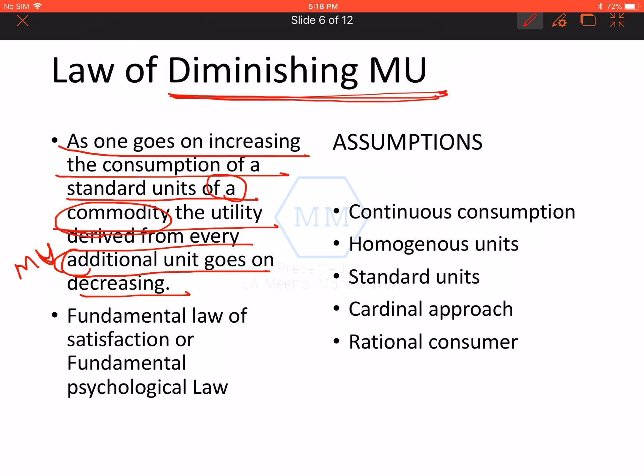Every additional unit — MU is what we are talking about. As we increase the consumption of a commodity, the amount of MU will keep reducing. For example, if I am very thirsty and I drink a glass of water, the satisfaction from the first glass of water is more than the second glass, and the second is more than the third.